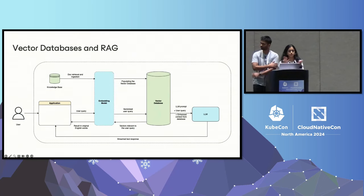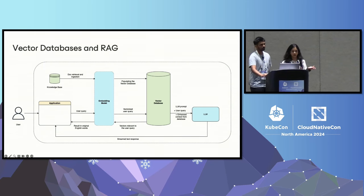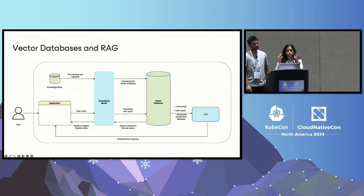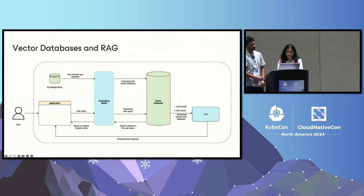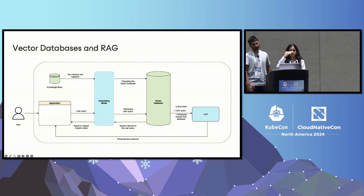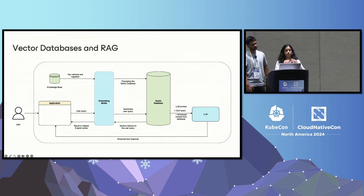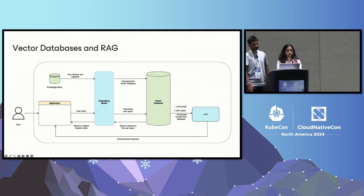Let's look at the basic architecture of a RAG system. The main components are a knowledge base with relevant text, audio, and video data; an embedding model that ingests unstructured data and converts it into vectors; the vector database, which stores those vectors long-term and clusters them by similarity; and the LLM, a pre-trained model that generates output based on a given query. When a user provides a query, the embedding model converts it into a vector, which is used to query the vector database. The vector database returns similar vectors as enhanced context for the LLM, which then generates a relevant output streamed back to the user.